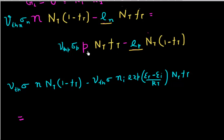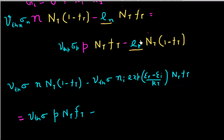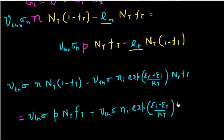Now I need to equate this to R3 minus R4. I write R3 again as Vth·σ times P times Nt times Ft. Then I use the formula for the emission coefficient of holes, which is Vth·σ·Ni times exponential of (Ei minus Et)/kT times Nt times (1 minus Ft).